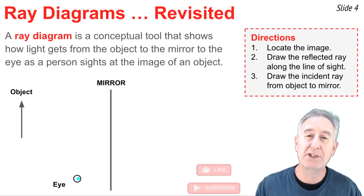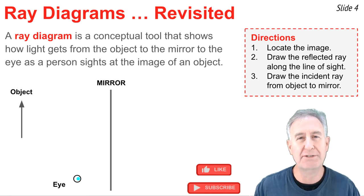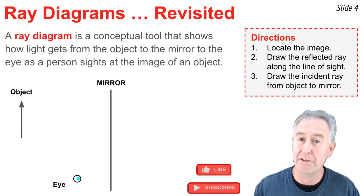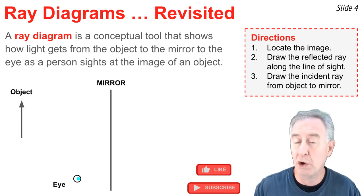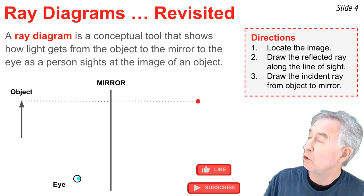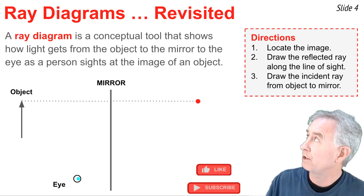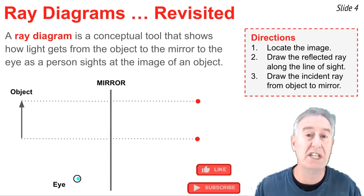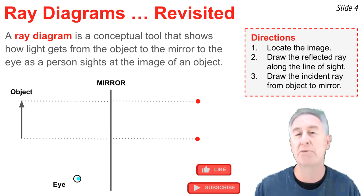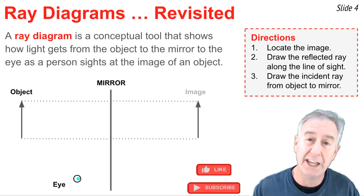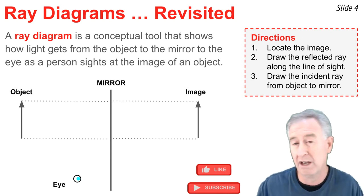A ray diagram is a conceptual tool that shows how light gets from the object to the mirror to the observer's eye. We can use a ray diagram to solve this problem. The process of drawing a ray diagram involves three steps, and the first one is you locate the image of the object. You measure out behind the mirror the same distance the object is in front of the mirror. You put down a dot, and then you draw in the complete image of the object.